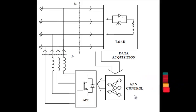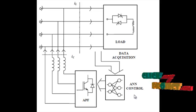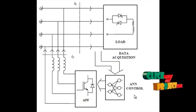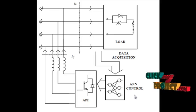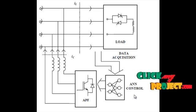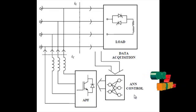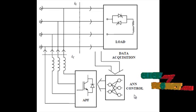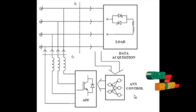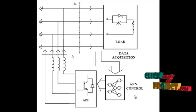In our process, we check the fundamental frequency of the output current from the load. If the fundamental frequency changes from our desired level, then the artificial neural network sends a signal to the APF. The APF is the shunt controller, and it generates the three-phase voltage level by using capacitors.